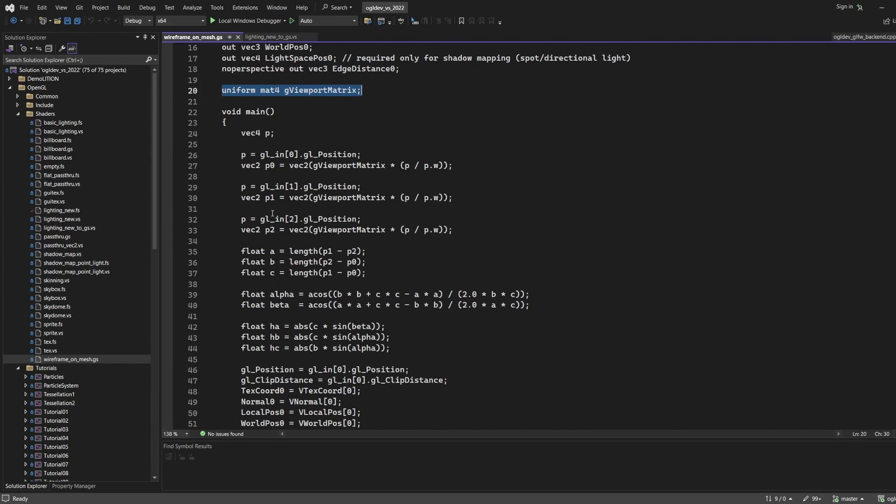We need the position in NDC space, but the vertex shader multiplied the local space position by the WVP matrix, so the position is actually in clip space. We have to divide it by the w component to get it from clip space to NDC. Remember that the clip space position is available in the GS in the gl_in array.